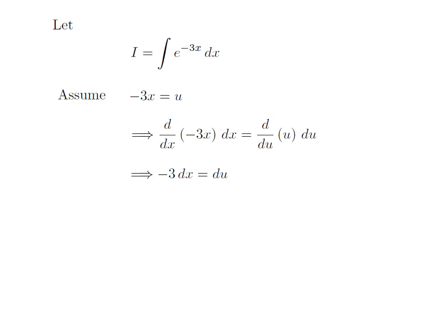As we know, the differentiation of minus 3x with respect to x is equal to minus 3, and the differentiation of u with respect to u is equal to 1. So we are left with minus 3 into differential of x is equal to differential of u. Taking minus 3 to the other side, we get differential of x is equal to minus 1 upon 3 into differential of u.